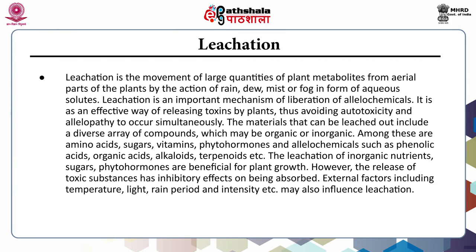Next is the release of allelochemicals via leaching — the movement of large quantities of plant metabolites from aerial parts of plants by the action of rain, dew, mist or fog in the form of aqueous solutes. Leaching is an important and effective mechanism of liberation of allelochemicals, helping avoid autotoxicity and allelopathy occurring simultaneously. The materials that can be leached include a diverse array of organic or inorganic compounds: amino acids, sugars, vitamins, phytohormones and allelochemicals such as phenolic acids, organic acids, alkaloids and terpenoids. Leaching of inorganic nutrients, sugars and phytohormones can be beneficial for plant growth.